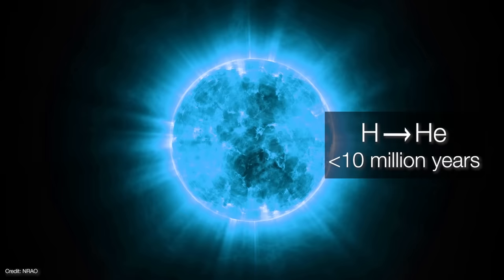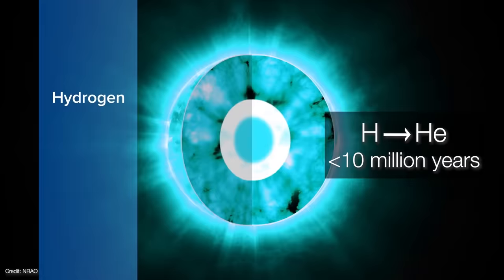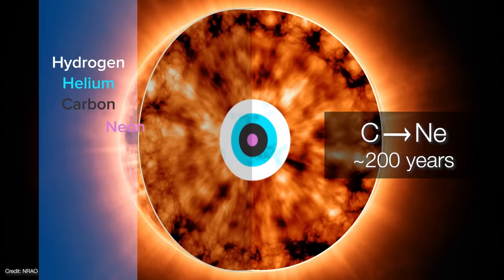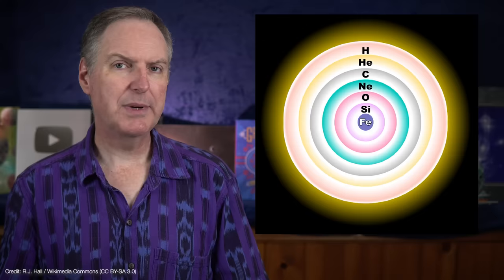With each stage of the star's evolution, the core gets hotter and fuses faster. So Betelgeuse should fuse its helium core into carbon in just a hundred thousand years. Carbon is fused into neon in a couple of centuries. Neon fuses into oxygen in a few decades. Oxygen is fused into silicon in a couple of months. And silicon fuses into iron in about one day.